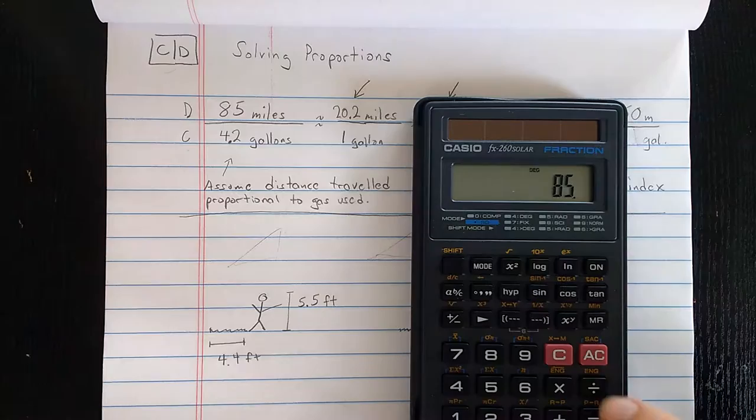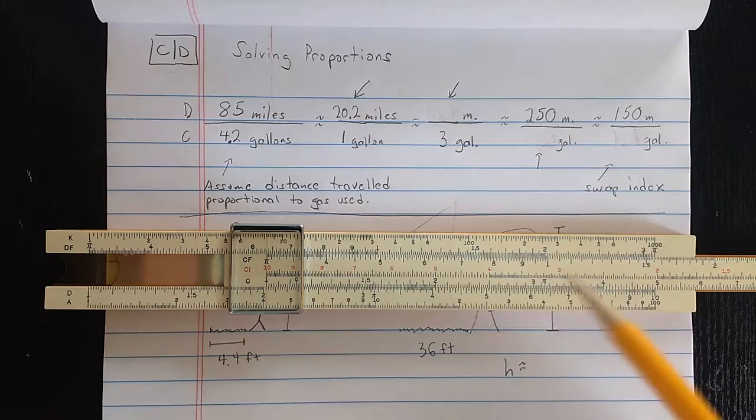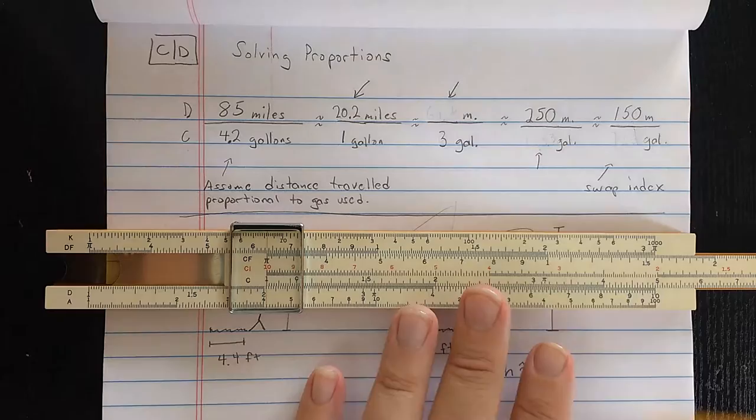Let's check how accurate that is using the calculator. So what I found there is 85 divided by 4.2, 20.23 and so on. Not too bad. Now, to solve the rest of these proportions, I don't move the slide, because I want each of these proportions to represent the same ratio.